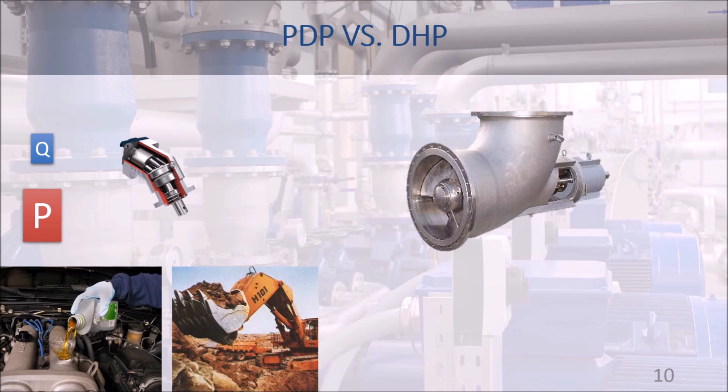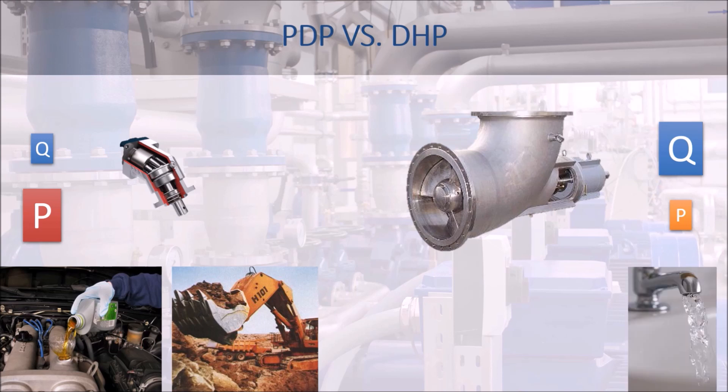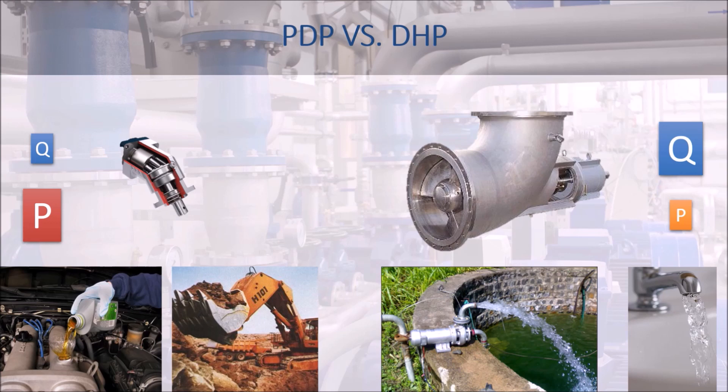Dynamic head pumps provide a smooth, continuous flow, large sizes are applicable, and surge protection is not needed, so the flow rate delivered is generally large. On the other hand, pressure depends on rotation, making high pressures difficult to achieve. Viscosity plays a negative role here — it causes high friction due to high relative velocity between the fluid and the blades — so dynamic head pumps perform better with light liquids such as water. These characteristics make the dynamic head pump the first choice for liquid transportation.